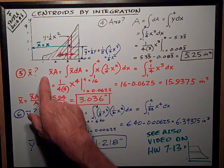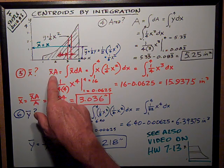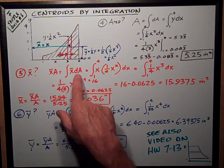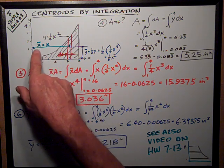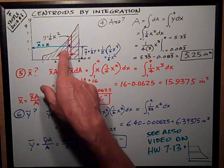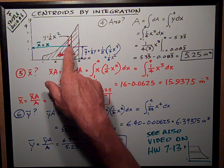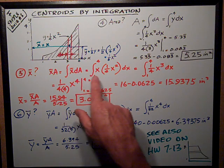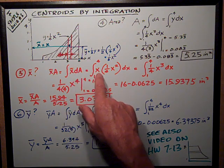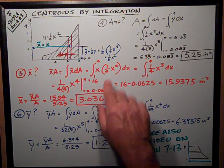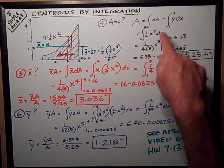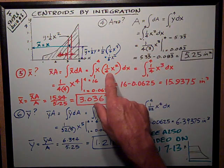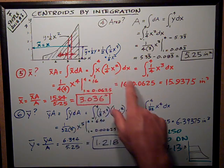First I need to get x-bar A, which equals the integral of what I call x tilde times dA. X tilde is the distance from the y-axis to that elemental area dA, and that's just the x value. Evaluating that out, I get x tilde times dA. This expression is dA, comes from up here, where dA is y dx, that's y, that's dx.